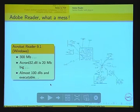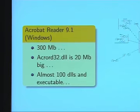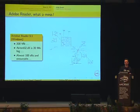Adobe Reader is about 300 megabytes. The main DLL is 20 megabytes. You can see lots of connections between the various parts of the program — some for specifications, some for cryptography. Each block deals with a specific feature. So when you want to focus on Adobe Reader, it's impossible to look at everything — you have to focus on specific features. That's what we chose to do.